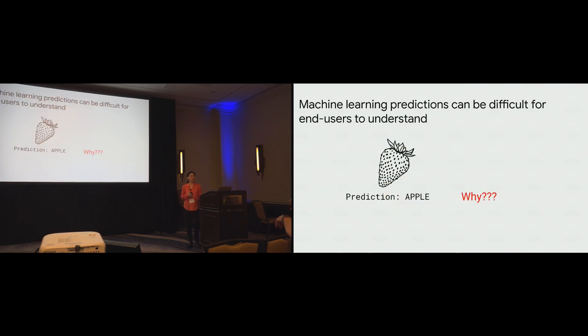The motivation behind this work is that machine learning predictions can be difficult for end users to understand. For instance, given just this humorous example, you can imagine that an end user might want to know why the strawberry was predicted to be an apple.